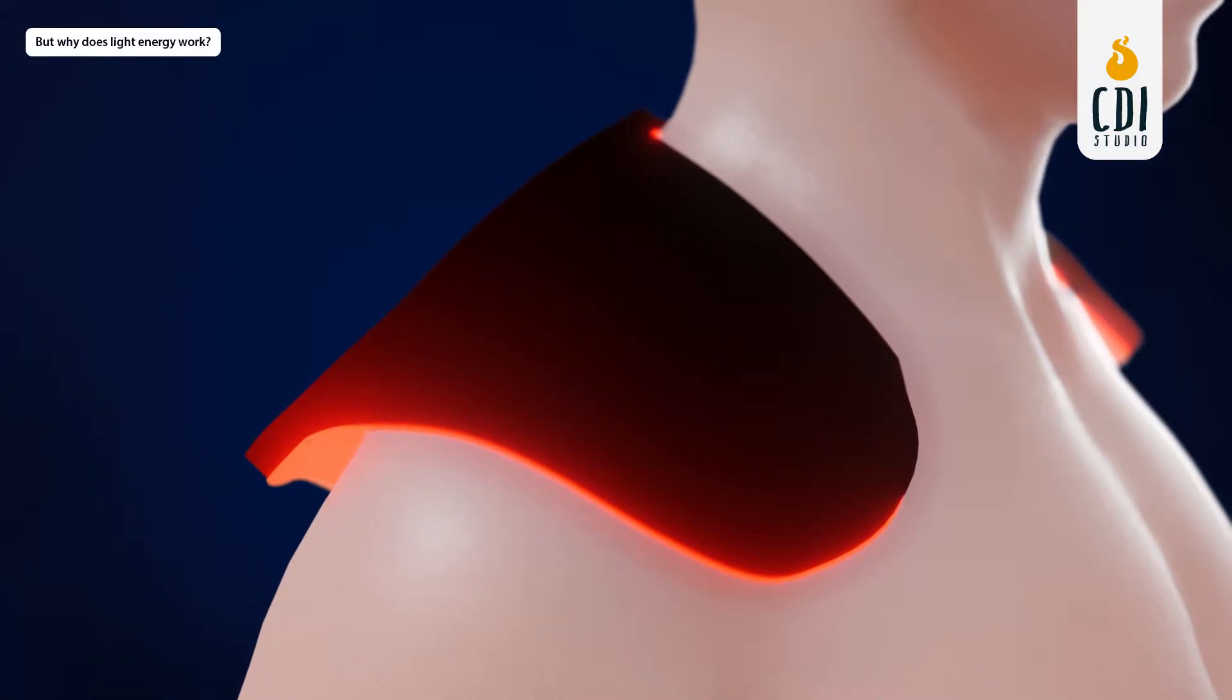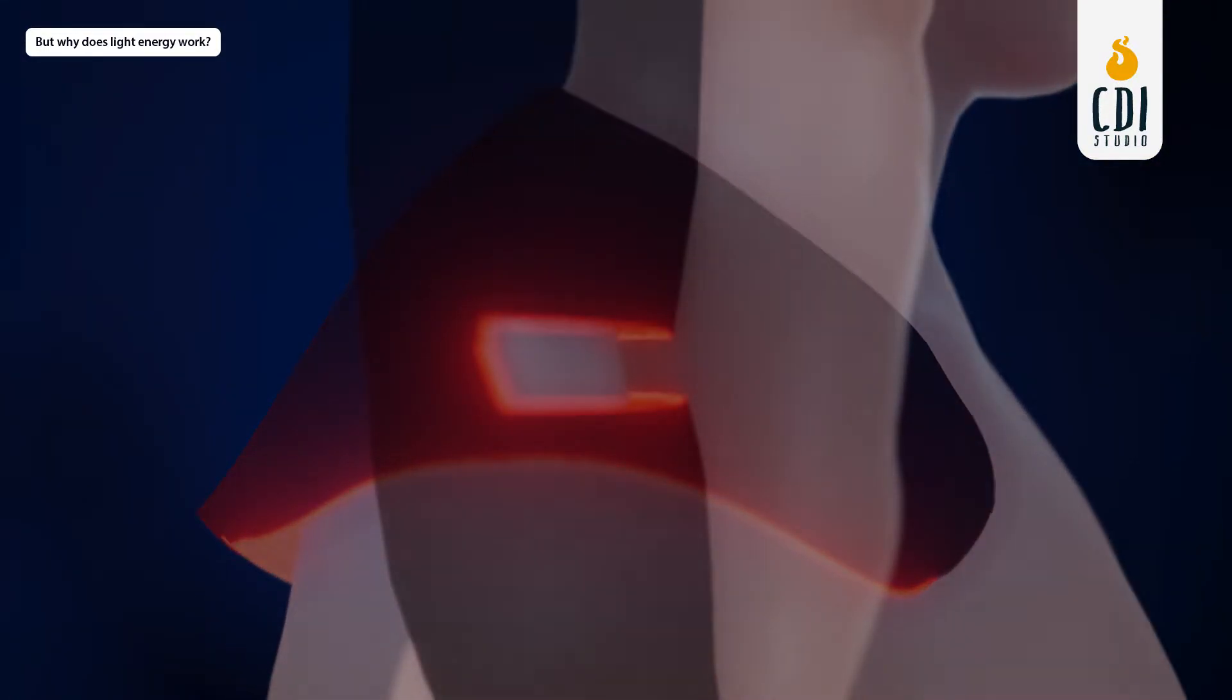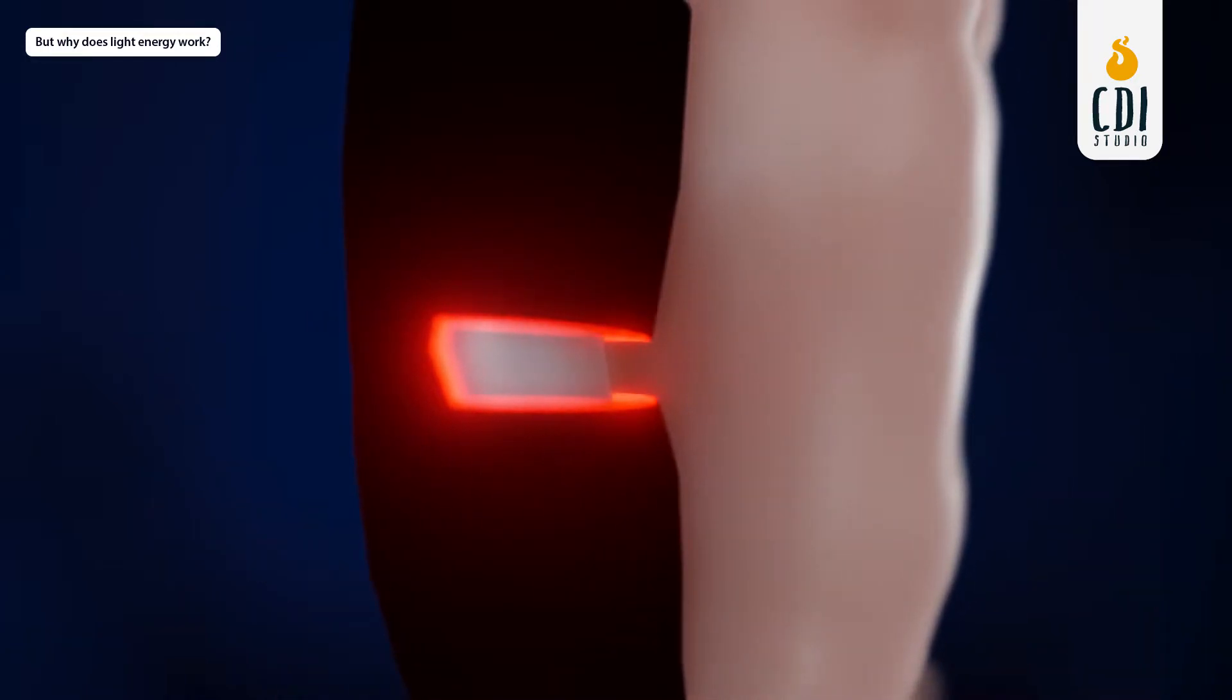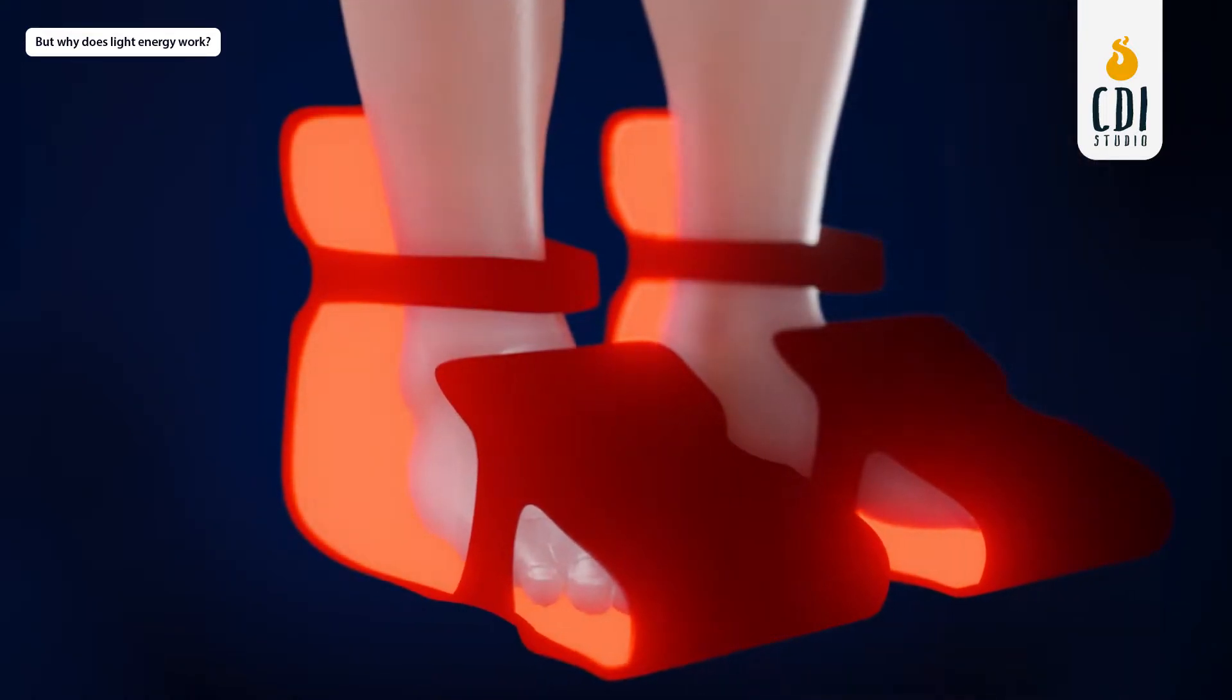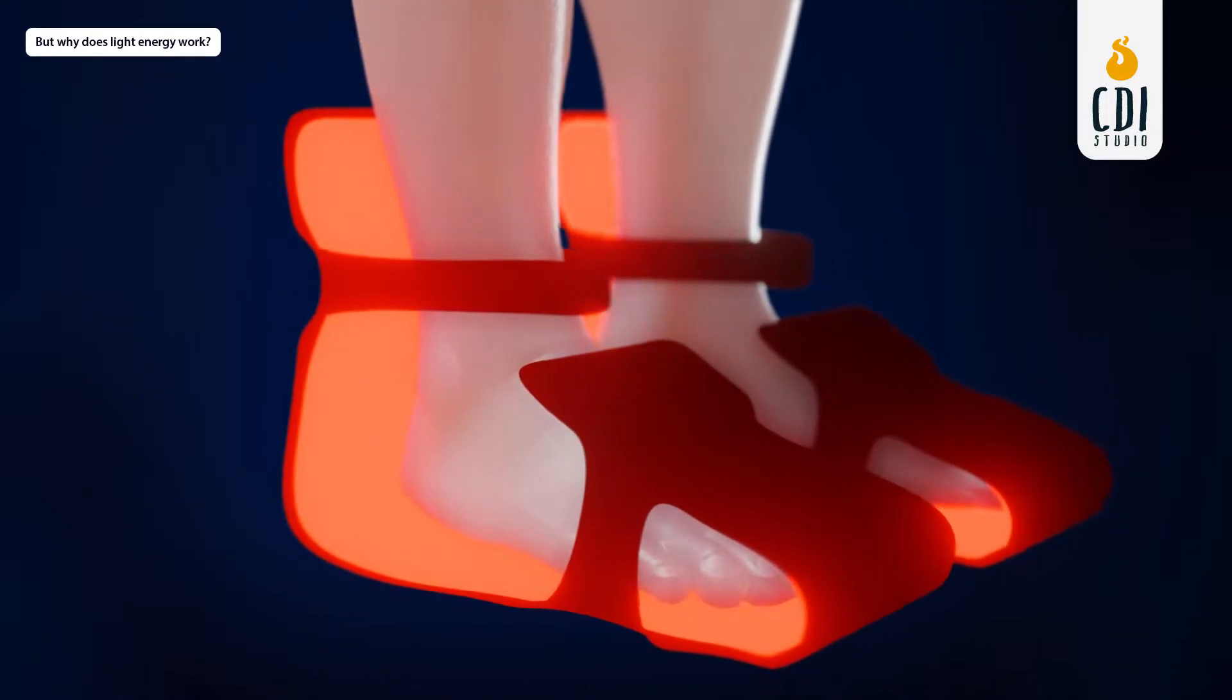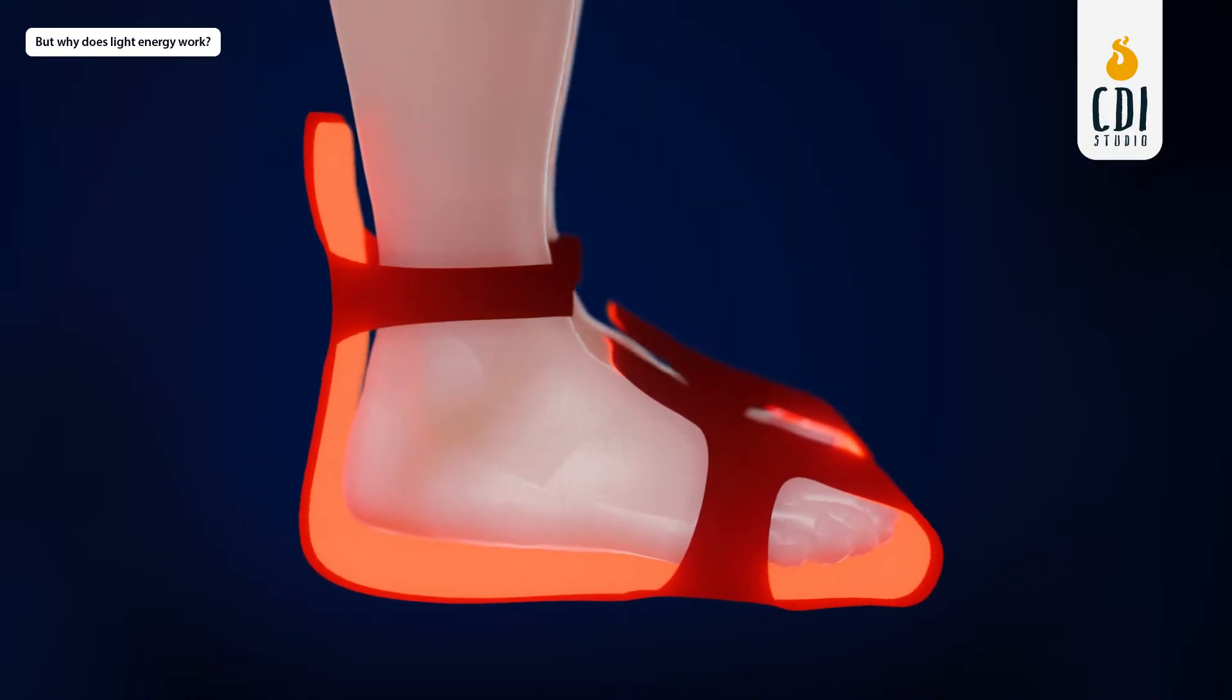Light energy stimulates the release of nitric oxide from hemoglobin into the bloodstream. When nitric oxide is released from hemoglobin, it enters the muscle cells and walls of the blood vessels. The muscle cells relax as the blood vessel diameter enlarges, allowing more blood to flow through the vessels.